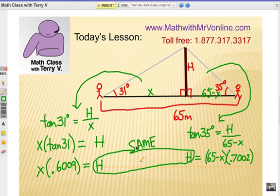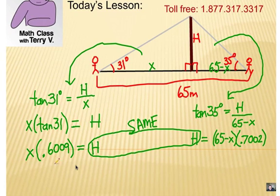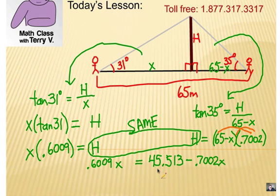All right, now notice that we have an expression on the left for H, the height of the spire, and we have a different expression of the height of the spire, so we're going to set those two expressions equal to each other. Now I'm going to kind of simplify as I go, so on the left let's write it as 0.6009X equals this part right here. Now I'm going to go ahead and multiply using the distributive property. So that decimal value times 65, that decimal value times the X, and put a subtraction in between: 65 times 0.7002 is 45.513, we'll round it to three places there, minus 0.7002X.